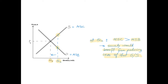To really understand allocative efficiency, look at situations where products are over-provided or under-provided by the market. Remember, allocative efficiency occurs when scarce resources are allocated to producing the goods and services that society wants or desires, and it happens at the intersection of the demand and supply curves — at equilibrium in a competitive market.